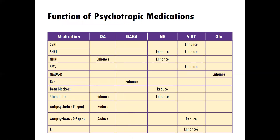Let's look at the common classes of medication and which of these neurotransmitters they affect. SSRIs, or selective serotonin reuptake inhibitors, are primarily prescribed for depression, and I would also say anxiety, in addition to conditions like OCD. They're known to enhance 5-HT, which is serotonin.